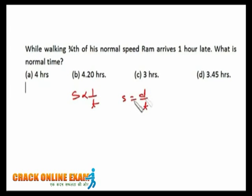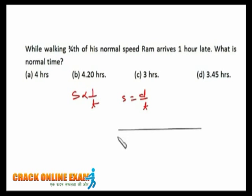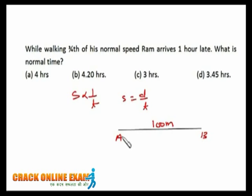If the distance is constant and speed is increased, time will be decreased. Let's say we have to cover distance A to B — maybe 100 meters. If Ram doubles his speed, he'll cover this distance in half the time. If he triples his speed, he'll take one-third of the normal time.